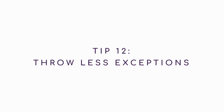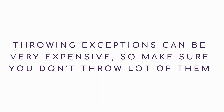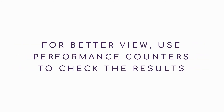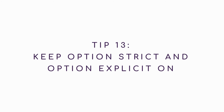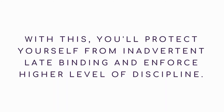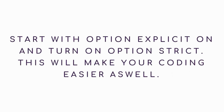Tip 12: Throw less exceptions. Throwing exceptions can be very expensive, so make sure you don't throw a lot of them. Use performance counters to check the results. Tip 13: Keep Option Strict and Option Explicit on. This will protect you from inadvertent late binding and enforce a higher level of discipline. Start with Option Explicit on, then turn on Option Strict — this will make your coding easier as well.